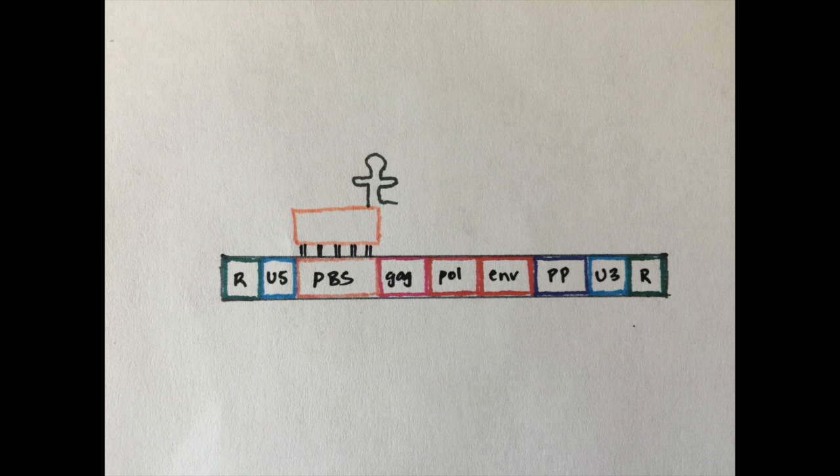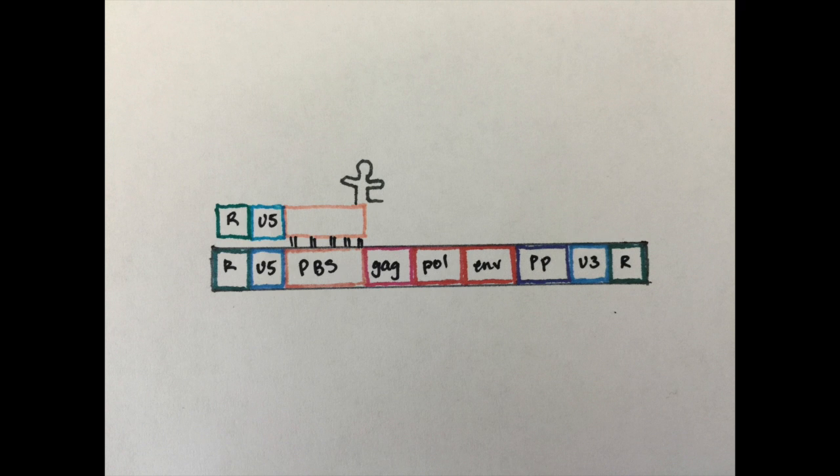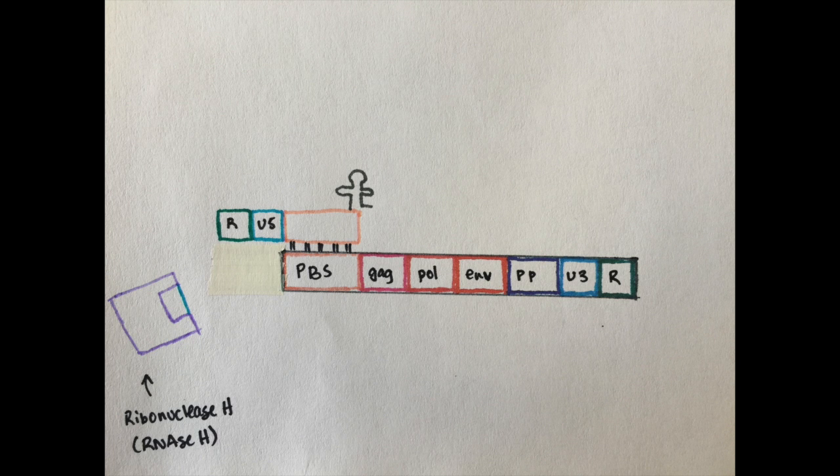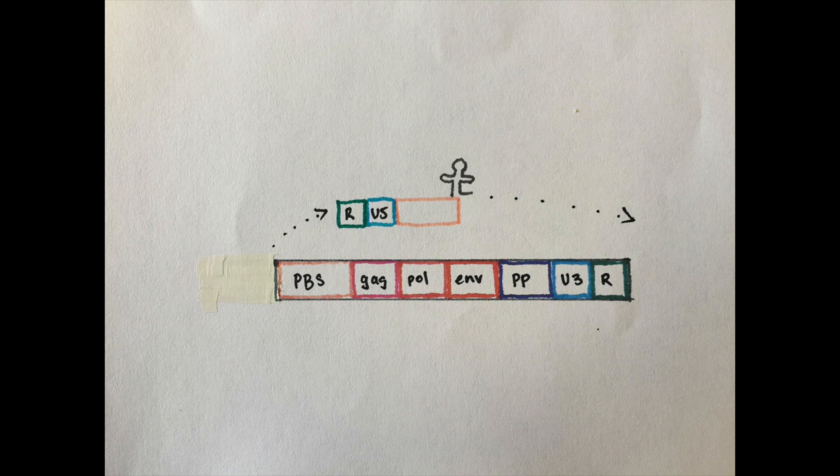Complementary DNA then binds to the U5 non-coding region and R region, a direct repeat found at both ends of the RNA molecule of the viral RNA. A domain on the reverse transcriptase enzyme called RNase H degrades the 5 prime end of the RNA, which removes the U5 and R region.